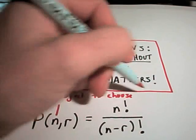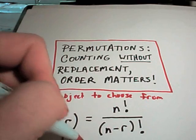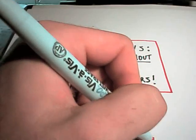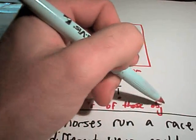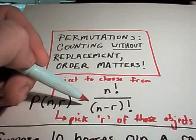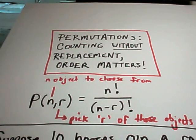And it says what we're going to do is we're going to pick r of those objects. This is the formula that you use: n factorial over (n minus r) factorial, all of that simplified.